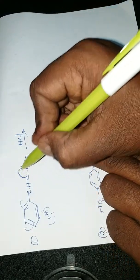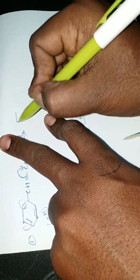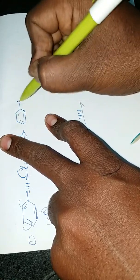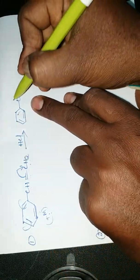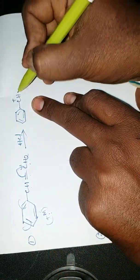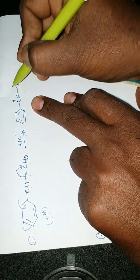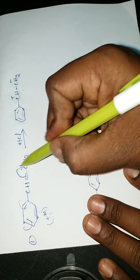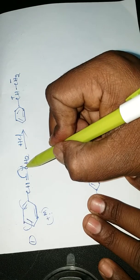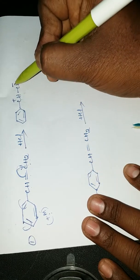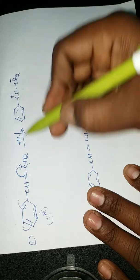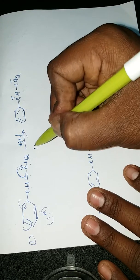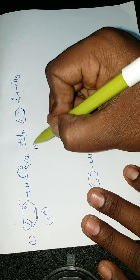Benzene has a plus mesomeric effect, which increases the pi electron density. So the electron shifting is always towards the right hand side. Because of this electron shifting towards the right, the structure becomes: benzene-CH⁺...CH₂⁻.